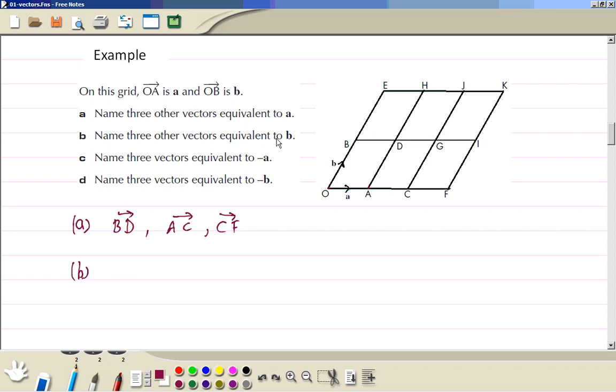Three vectors equivalent to b: AD, BE, and we could have CG, or FI, GJ, all of them are equivalent to b.